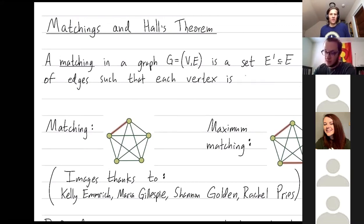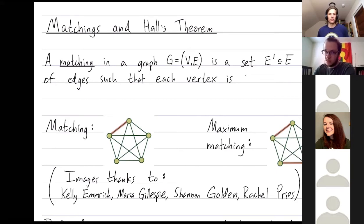Welcome everybody! I wanted to talk about section 8.2 from the book Matthew Second Gardner. This section covers matchings and Hall's theorem, and dually also vertex coverings and Koenig's theorem, although we'll save that for the next video.